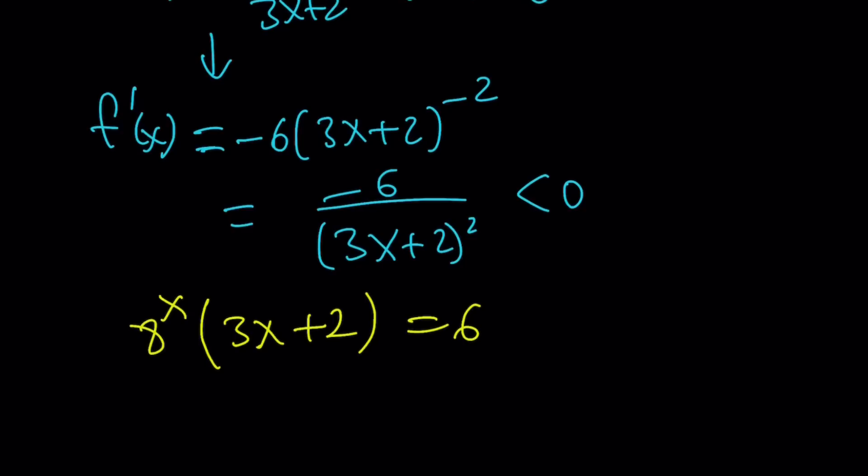So here's the thing. If I'm looking for rational solutions, you know, this is probably going to be an integer. So I want to try, I want to test one third. If x is equal to one third, I get 8 to the power one third, multiply by 3 times one third plus 2, that is going to be 2 times 3, and that is equal to 6.